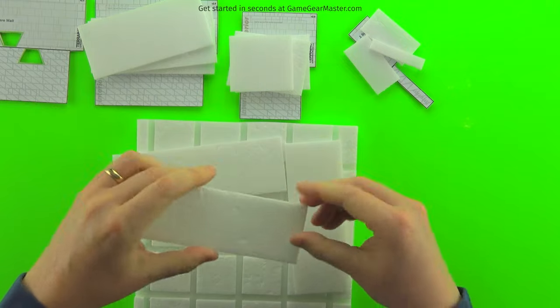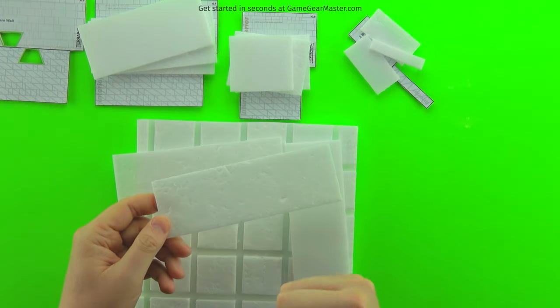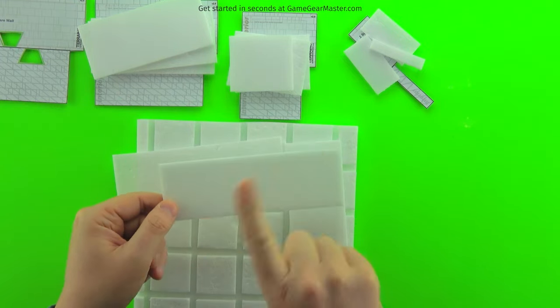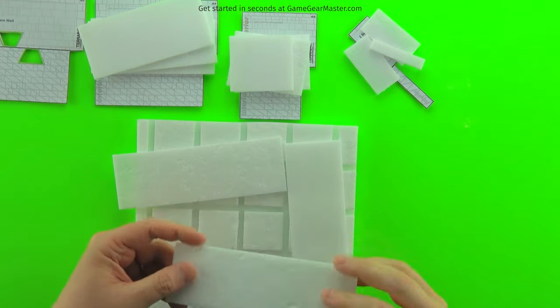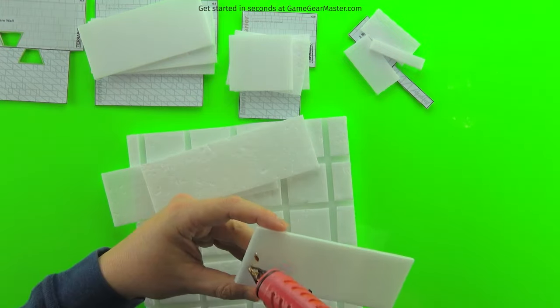And we're going to use the grid tile we made in the previous video to set the depth of that interior part of the wall. And we're also going to make sure that we use the textured sides on the outside of our wall.